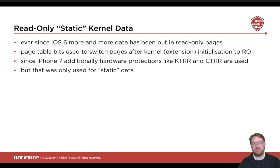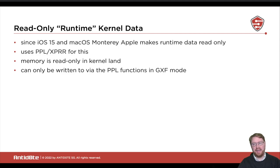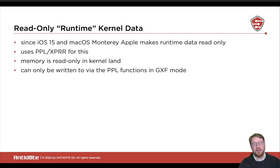However, the way this worked was only feasible for static data — runtime kernel data structures could not be protected from being overwritten at all. With the release of iOS 15 and macOS Monterey, Apple basically changed all of that. They started to build up the infrastructure to make data structures of the kernel read-only at runtime, so that even changeable data structures can be protected from write primitives corrupting kernel memory. They're using the PPL XPRR feature for that.